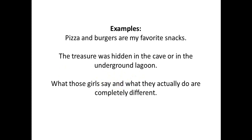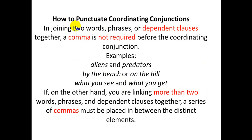Now, how do we punctuate coordinating conjunctions? When two independent clauses are joined by a coordinating conjunction, we place a comma before the conjunction. When more than two words or dependent clauses are joined in a list, we also use a comma.